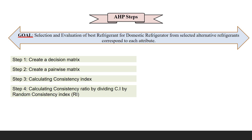These are the AHP steps that we have followed for calculations of the AHP method. From the AHP method we got some results for the best refrigerant for the domestic refrigerator. The goal of this AHP step is to select and evaluate the refrigerant for the domestic refrigerator.